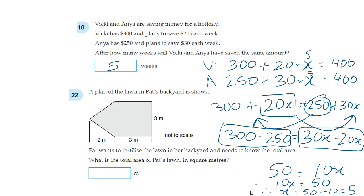Next question. A plan of the lawn in Pat's backyard is shown. Pat wants to fertilize the lawn in her backyard and needs to know the total area. What is the total area of Pat's lawn in square metres? So let's break it up into two shapes. So the square is just 3 times 3, 9 metres, 3 metres times 3 metres, so 9 metres squared. And this part is 3. Now we need to figure out the area of this triangle. So we know that this is 2, so that will be 2 metres. The perpendicular height is 2 and then the base is equal to 3 metres because of this.